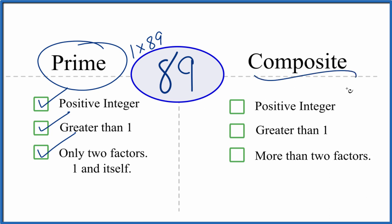Is it a composite number as well? Well, it's a positive integer and it's greater than 1, but there are only two factors. So there's not more than two. So 89 is not a composite number.